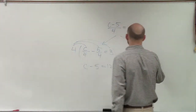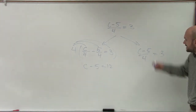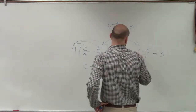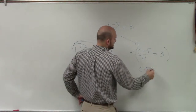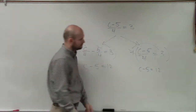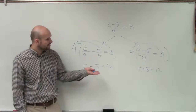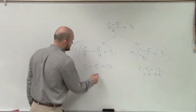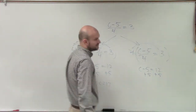You don't have to distribute the property or do all that work — just say, I need to get this 4 off the bottom. So if I just multiply by 4, I'm left with C minus 5 equals 12. Either way, you're going to get to C minus 5 equals 12. Now, I am subtracting, so I need to add the 5. C equals 17 is your final answer.